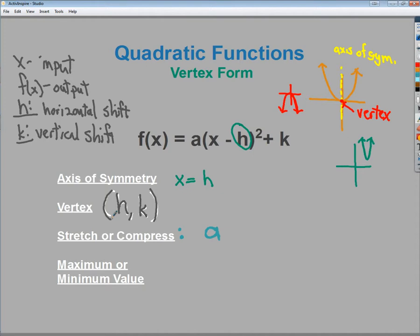Maximum and minimum values, I can find that piece of information sort of based on my k value. So it's going to be that my value is equal to k. Or I could say in another way that whatever the k value is sort of tells me what the maximum or minimum value happens to be. It also helps if I'm paying close attention to whether or not the a value is positive or negative.